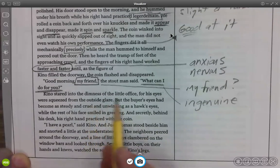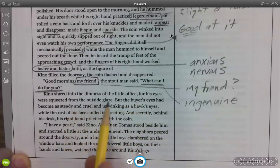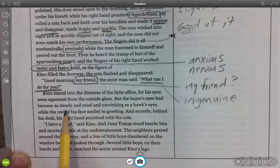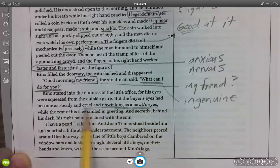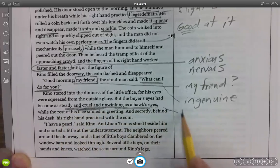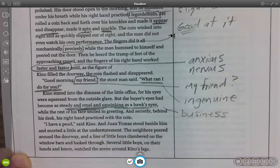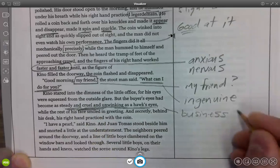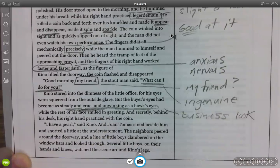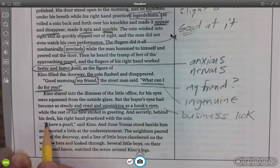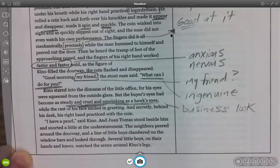Kino stared into the dimness of the little offices, for his eyes were squeezed from the outside glare. But the buyer's eyes had become steady and cruel and unwinking as a hawk's eyes. And it just feels like this dude is ready for business. Yeah, he might be a caller of good mornings and friendly and using the word my friend, but this is his business look right here. And secretly, behind his desk, his right hand practiced with the coin. You know, the coin becomes like a big thing at some point. You know, it's like the fourth time just on this little section that Steinbeck has even mentioned it.